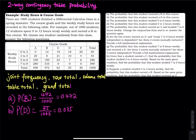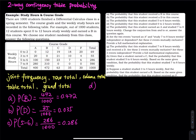Part C: How many people study 5 to 6 hours weekly? That would be the third row. You look all the way to the right — the row total is 286. You take that divided by the grand total: 0.286. Part D: The probability of studying 0 to 2 hours. That is the first row. All the way to the right, you have 69 divided by 1,000, which equals 0.069. These are all single events.